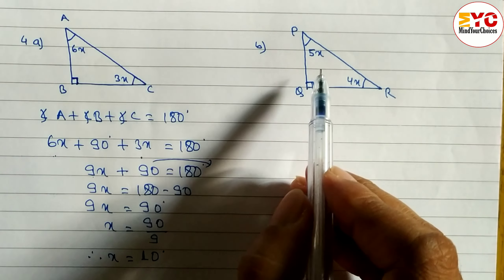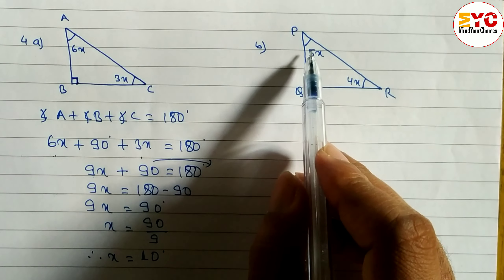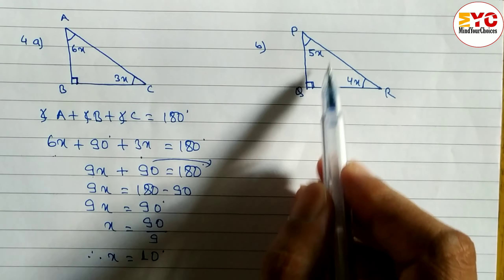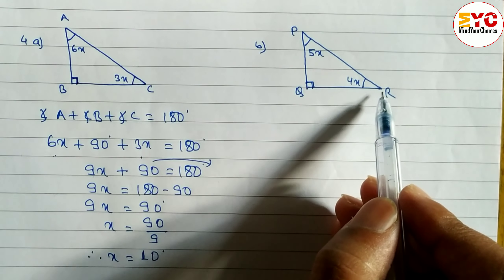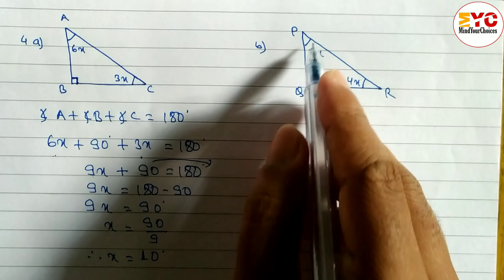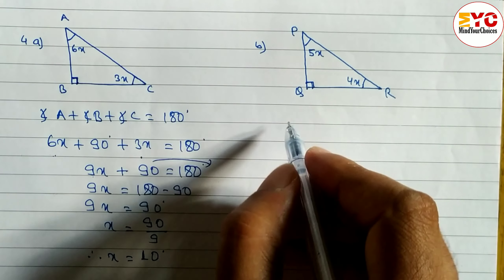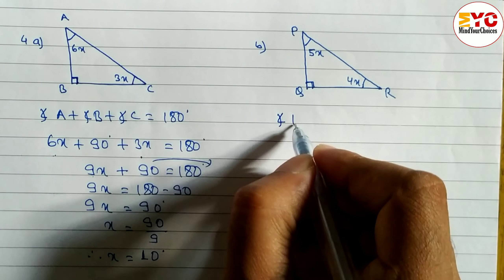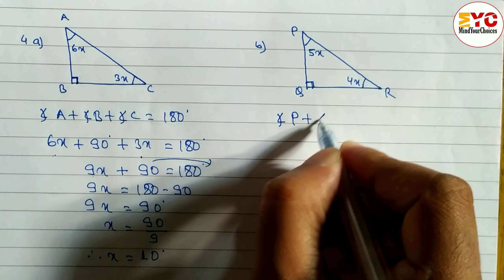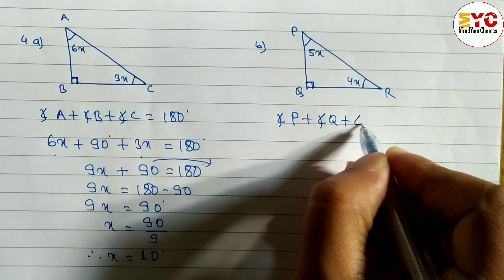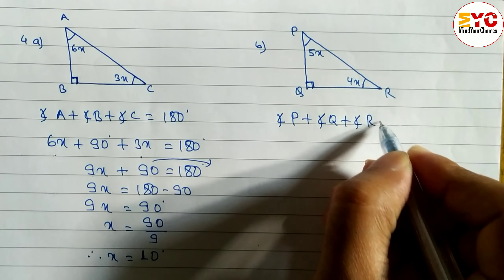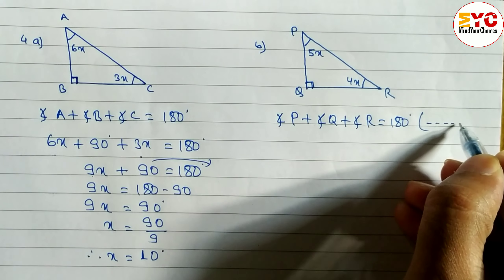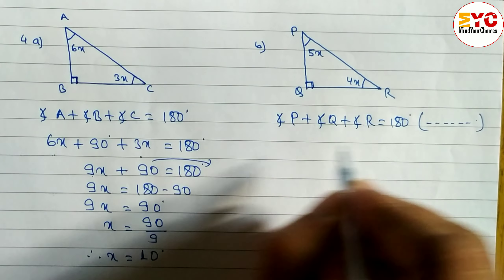Now look at question 4b. Here you can see angle P is equal to 5x, angle Q is equal to 90 degrees because it is a right angle triangle, and angle R is equal to 4x. When you add these three angles you get 180 degrees. Angle P plus angle Q plus angle R equals 180 degrees — the reason is the same: the sum of angles of a triangle.